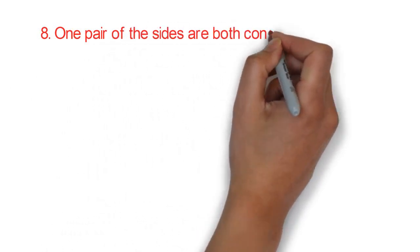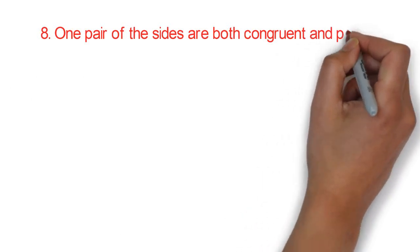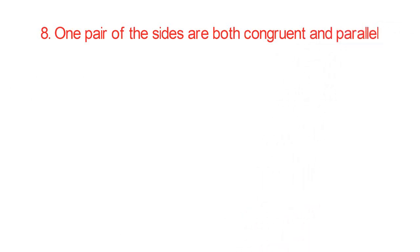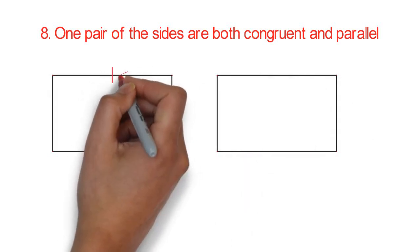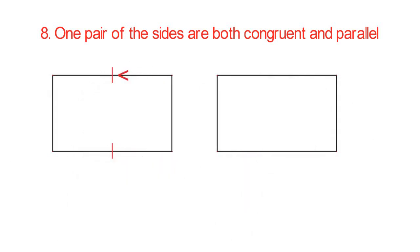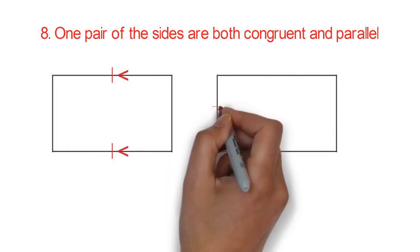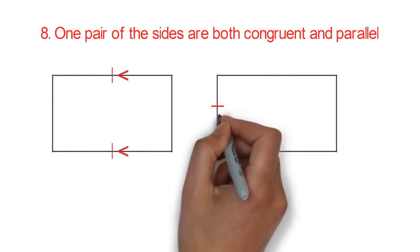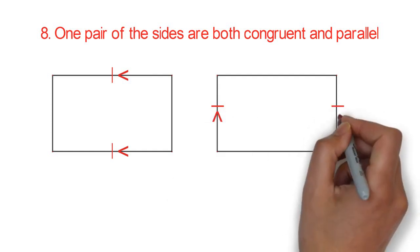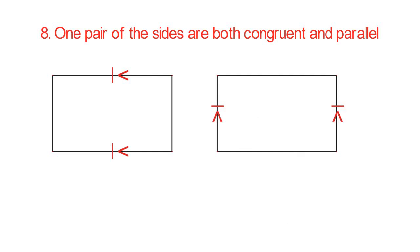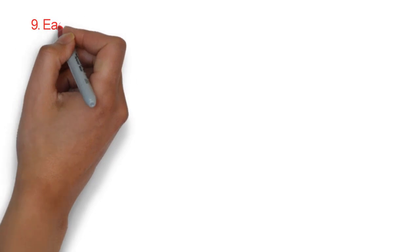Eight: one pair of the sides are both congruent and parallel. Congruent means equal. So this side is equal to this side, and at the same time parallel. And the other pair is also equal to each other and parallel. You can't have both pairs to be congruent and parallel at the same time — that was why we said one pair of them are equal and parallel.